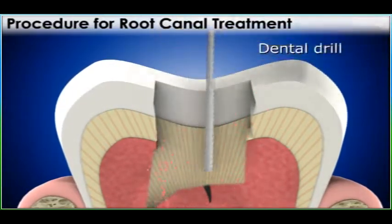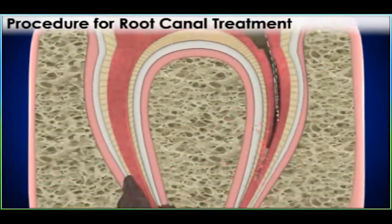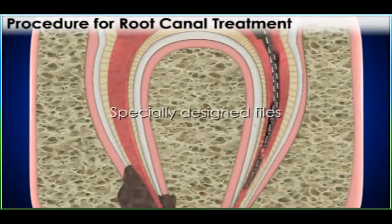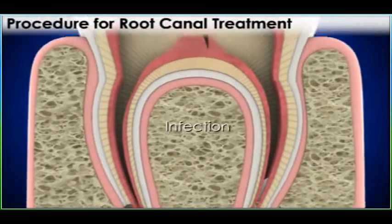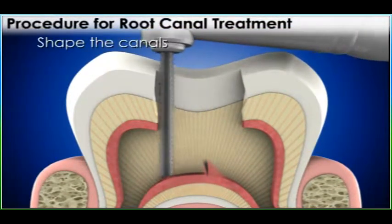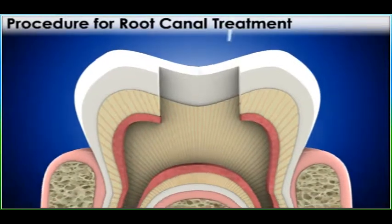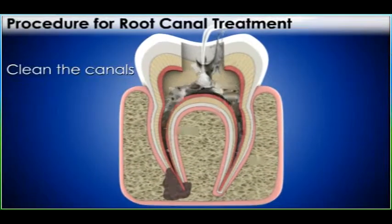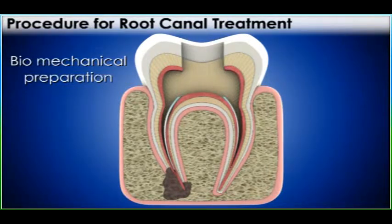The pulp is removed with the help of specially designed files. These special files are used to clean the infection and unhealthy pulp out of the canals, then shape the canals for the filling material. Irrigation is used to help clean the canals and remove debris after biomechanical preparation.